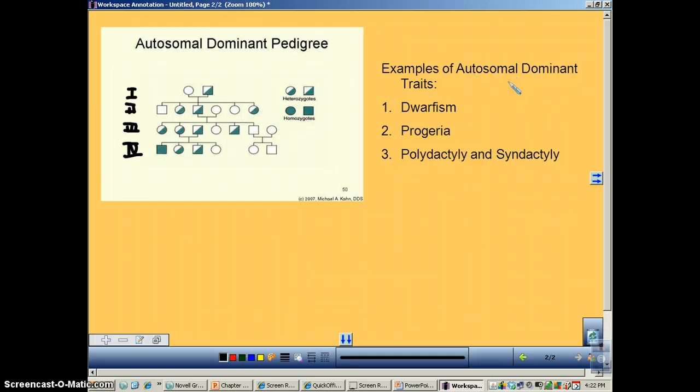This shows an autosomal dominant trait. Now, remember, with an autosome, it's on any of the chromosomes from one to 22. And we call this autosomal dominant, or autosomal trait, because it doesn't have anything to do with the gender. It shows up in equal numbers between boys and girls.